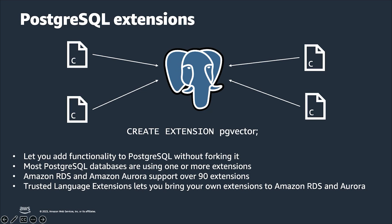Amazon RDS and Amazon Aurora Postgres support over 90 extensions. In addition, Trusted Language Extensions for Postgres is an open source development kit for building Postgres extensions in popular trusted languages such as JavaScript, Perl, PLRUST, and PLPG SQL. Trusted Language Extensions, or TLE, allows you to build high-performance Postgres extensions and safely run them on your RDS or Aurora Postgres databases.